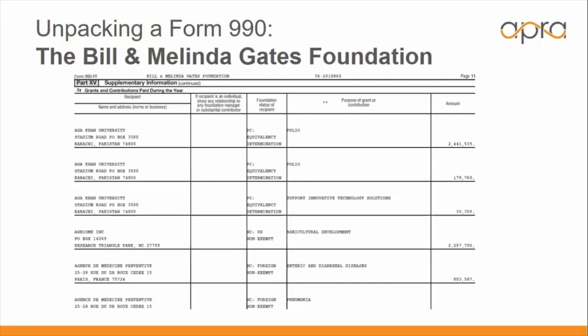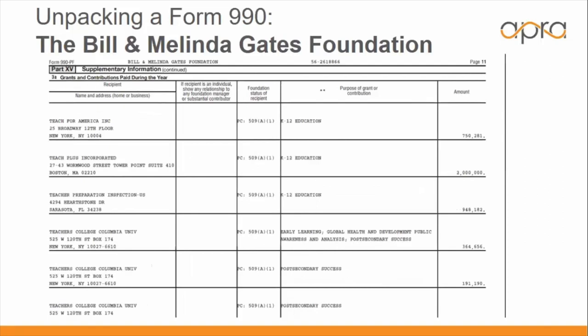Scrolling down farther within a foundation's 990, you can see specific recipients, the purpose of the grant awarded, and the dollar amount on the far right. There are examples of international organizations that received funding — a university in Pakistan and a medical organization in Paris, France. Domestically, in keeping with their educational mission, they awarded money to various teacher prep programs in Boston, Florida, and New York City. Note that Control+F can be your friend when looking through 990s if there's a specific organization you want to find — for example, searching for Teachers College of Columbia University would take you right to that recipient's line.